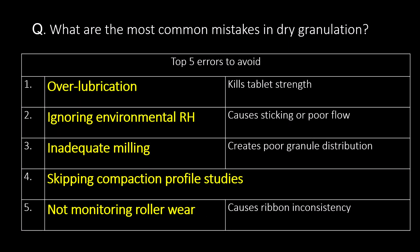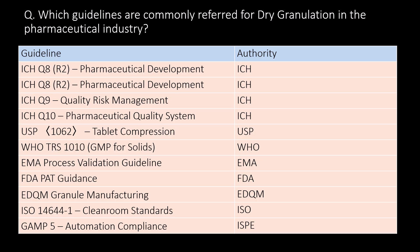What are the most common mistakes in dry granulation? The top 5 errors to avoid are: 1. Over-lubrication. 2. Ignoring environmental relative humidity. 3. Inadequate milling. 4. Skipping compaction profile studies. 5. Not monitoring roller wear. Which guidelines are commonly referred to for dry granulation in the pharmaceutical industry? ICH Q8, Q9, Q10; USP Chapter 1062; WHO TRS 1010; EMA Process Validation Guideline; FDA PAT Guidance; EDQM Granule Manufacturing; ISO; and GAMP 5 guidelines.